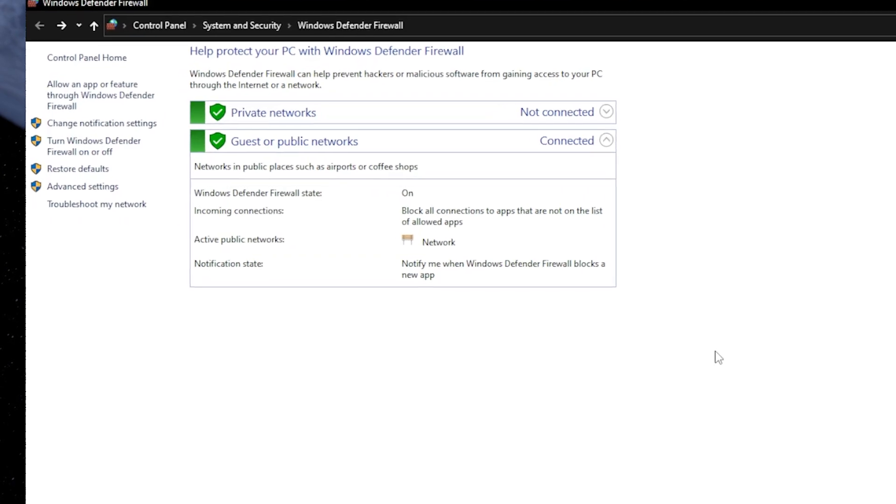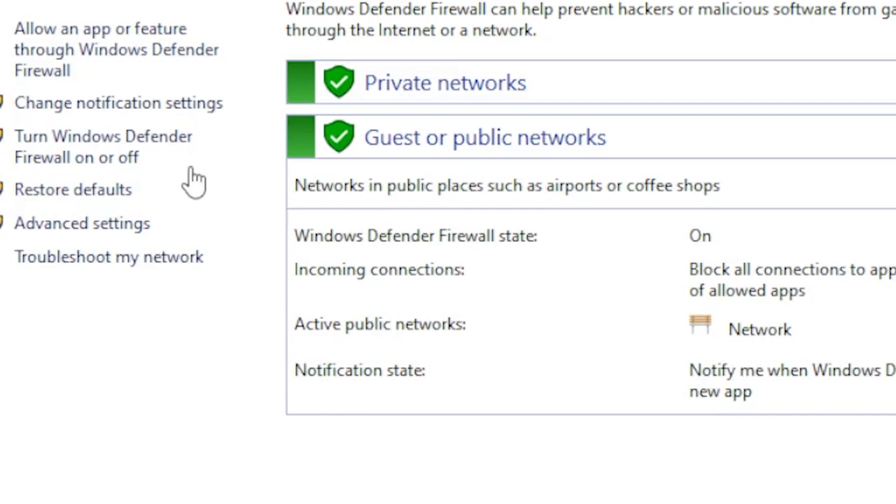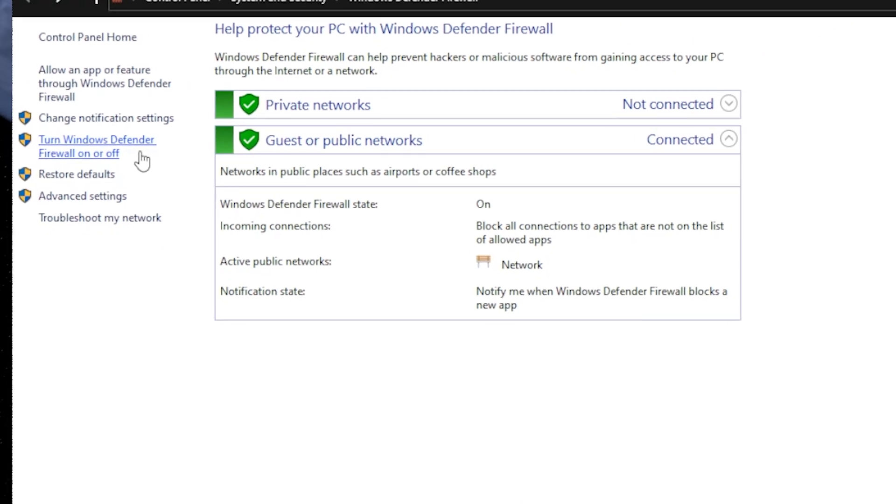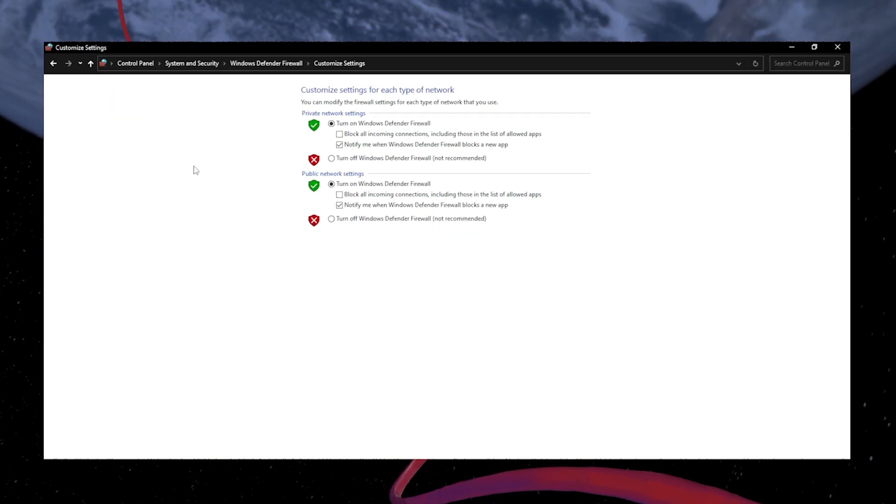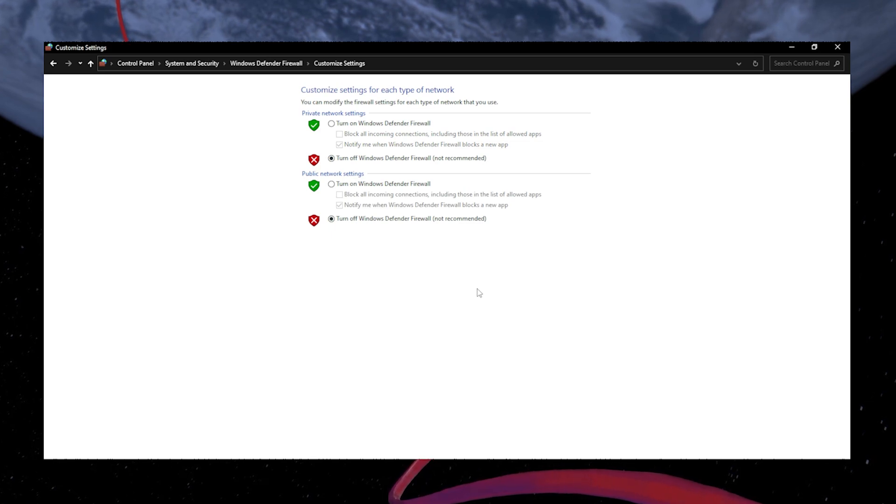On this window, click on Turn Windows Firewall On or Off in the left side menu bar. It will navigate you to this window. Here, turn off both Private Network Settings and Public Network Settings. You can close your settings window once you've completed this step.